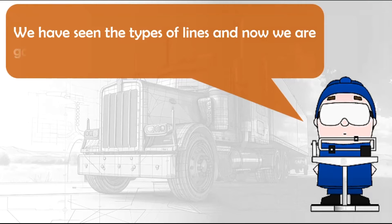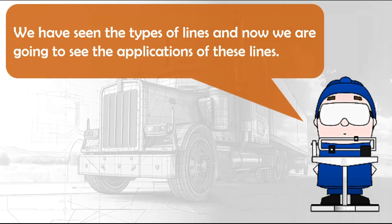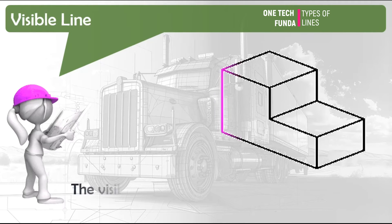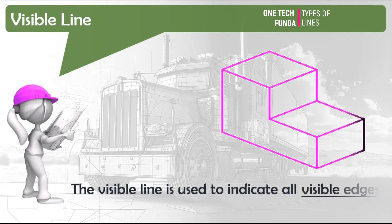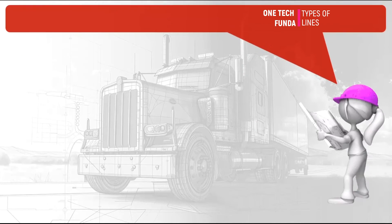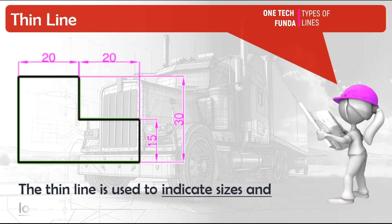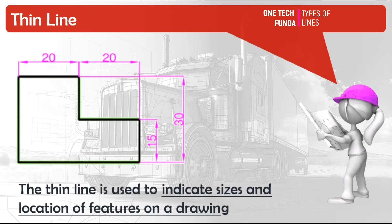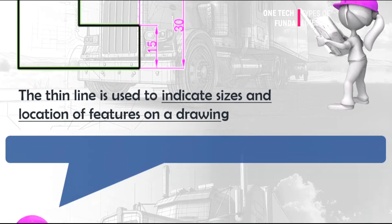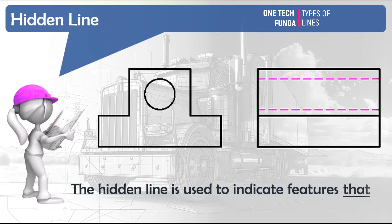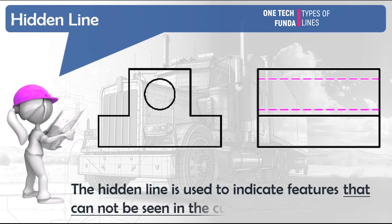We have seen the types of lines and now we are going to see the applications of these lines. Visible line: the visible line is used to indicate all visible edges of an object. Thin line: the thin line is used to indicate sizes and location of features on a drawing. Hidden line: the hidden line is used to indicate features that cannot be seen in the current view.